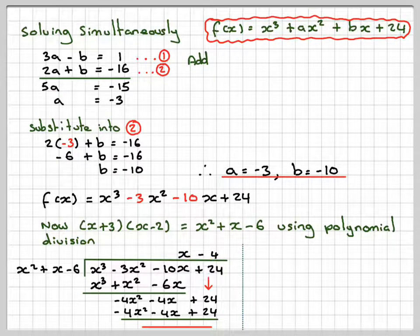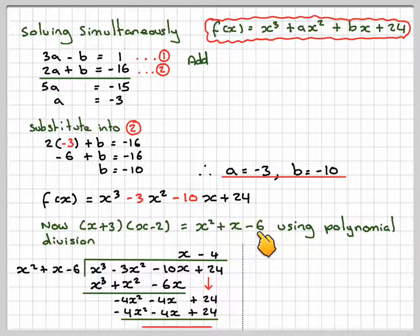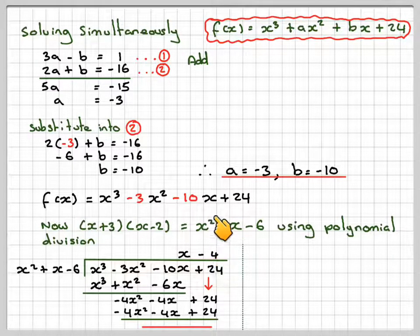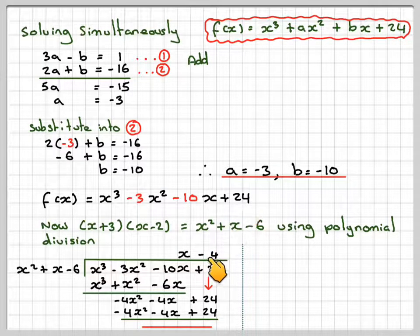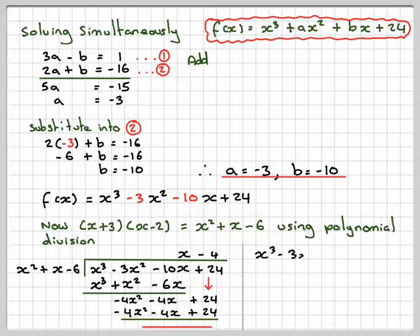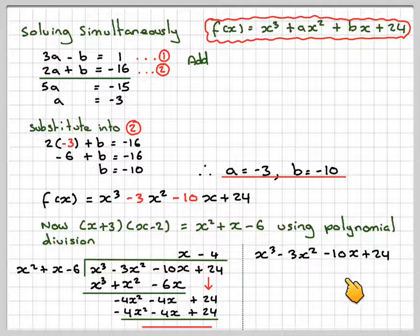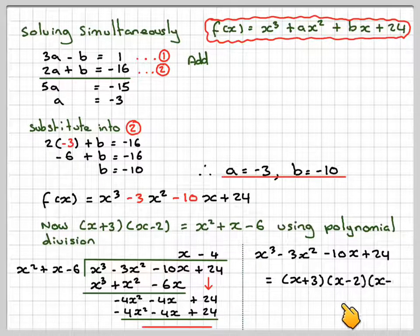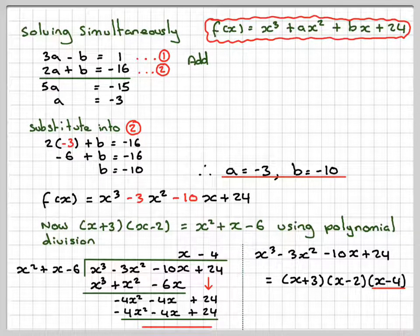So the other linear factor is x - 4. But we could have worked it out by doing what do I have to multiply -6 by to get +24, and the answer is -4. So x³ - 3x² - 10x + 24 can be rewritten as (x + 3)(x - 2)(x - 4).